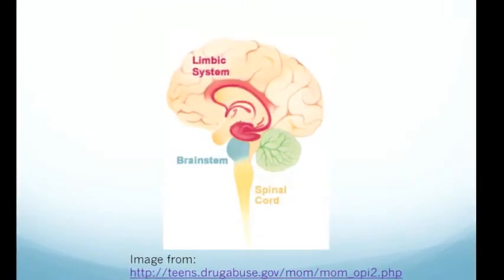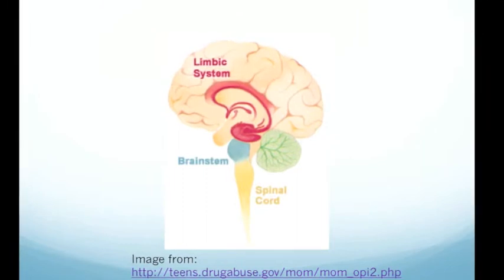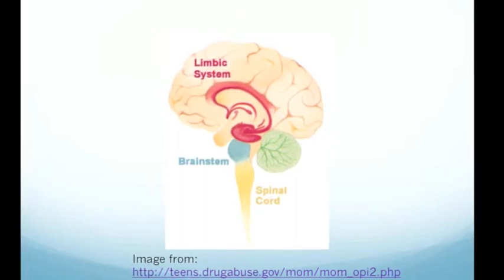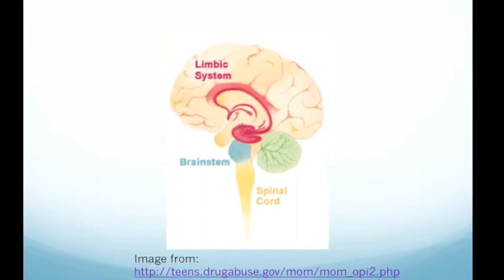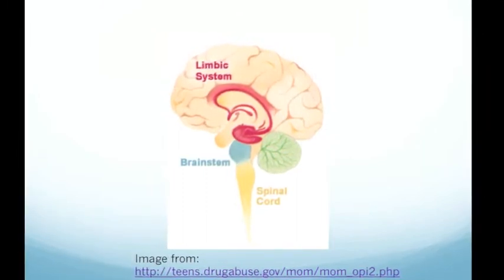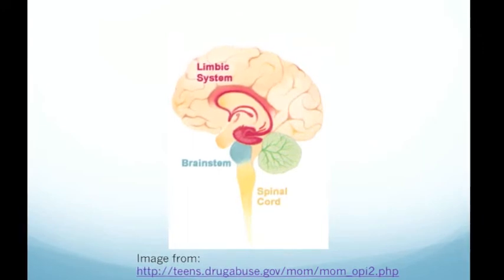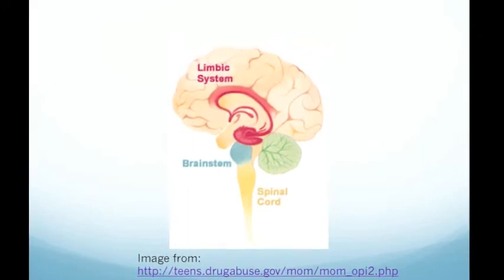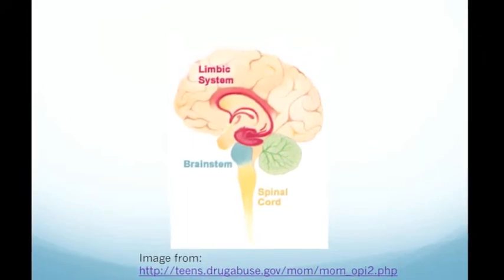The drug acts by binding to the opiate receptors in the brainstem and spinal column to achieve the anti-diarrheal, anti-tussive, and analgesic effects. It can also bind to the opiate receptors in the limbic system, causing euphoria and relaxation.